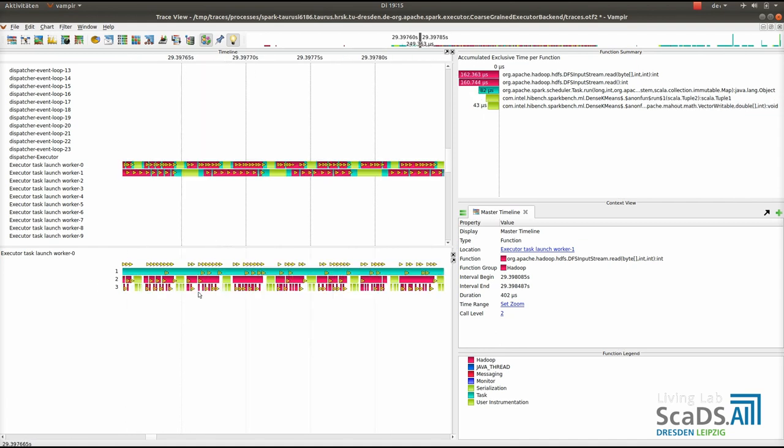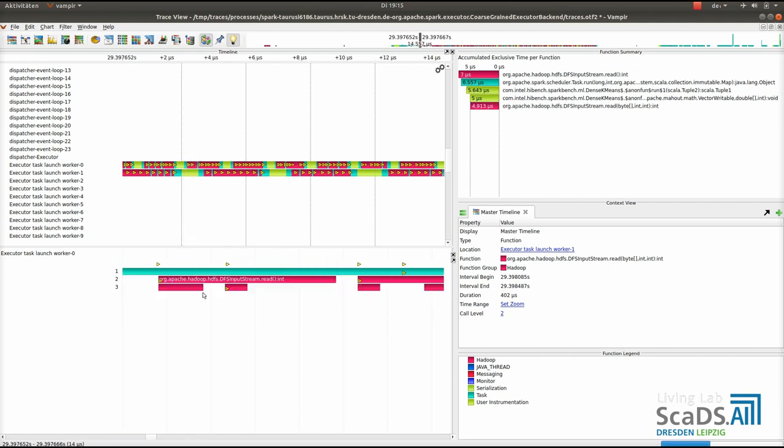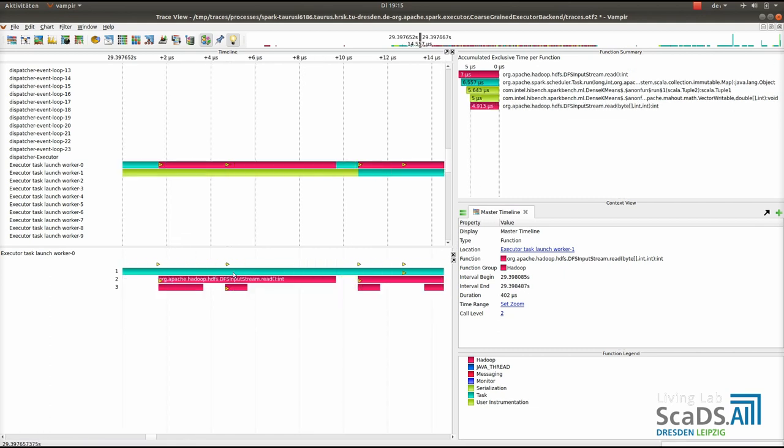And if we zoom in, we can find also a part where we see that we have a task which runs, which then calls the function read, which then results in an HDFS read, which is the Hadoop distributed file system. And here we can also see that it reads a part of the input sample of our application. In this case, it reads just one byte, which is not very efficient.